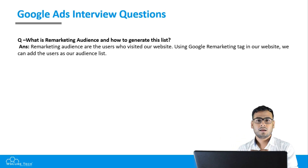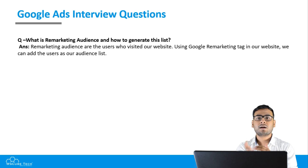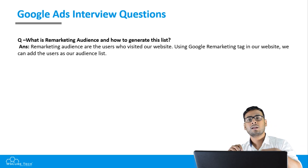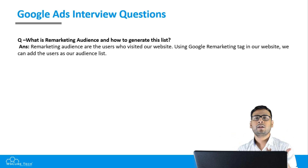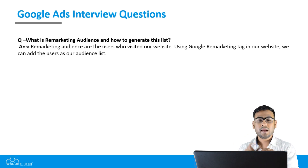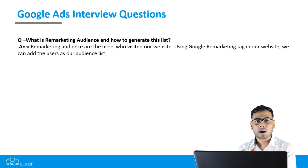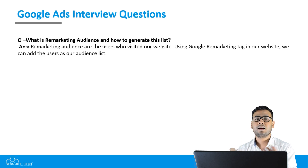The next question is: what is remarketing audience and how do you generate this list? Remarketing means that a visitor came to your website, and you captured their information. When they later use other apps or platforms, a tag tracks those visitors and holds their data as an audience. To create a remarketing audience, you put a Google Remarketing tag on your website. That audience list is your remarketing audience.